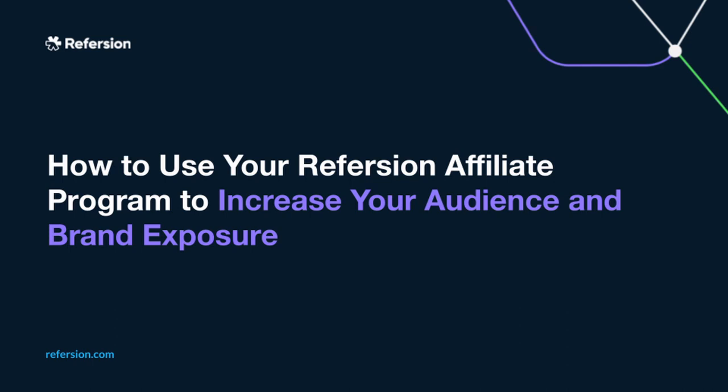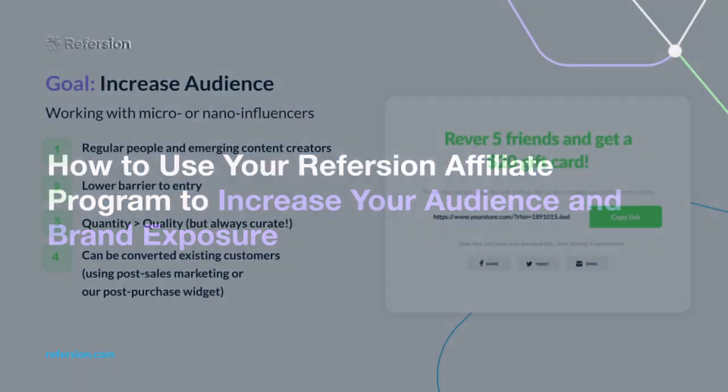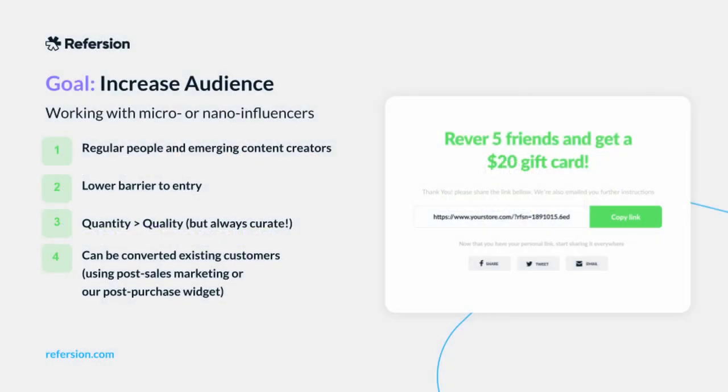Hi there. In this video series, we're going to cover four distinct goals that you can set for your affiliate program. In this particular video, we will discuss the goal of increasing your audience and brand exposure. If you're a company that's maybe a little bit more mature, or you want to focus a little more than just installing Refersion and playing for the long term, then really your next goal is to increase brand exposure and awareness.